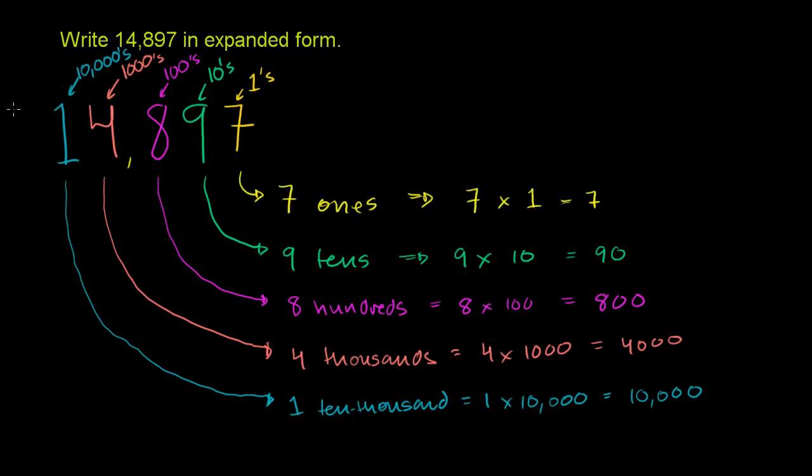So 14,897 is the same thing as 10,000 plus 4,000 plus 800 plus 90, that's the 90, or 90, plus 90 plus 7.